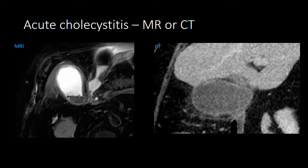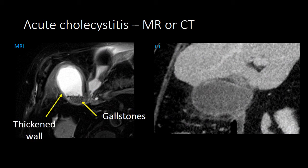Acute cholecystitis can also be diagnosed on CT or MRI. In the first example, we have an MRI image of the gallbladder. We can see small gallstones in the neck of the gallbladder, the gallbladder wall is thickened, and we can also identify inflammatory stranding next to the gallbladder.